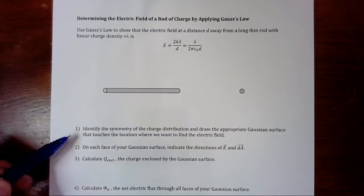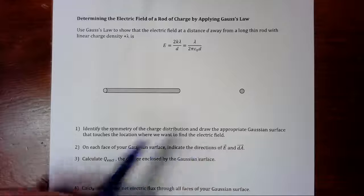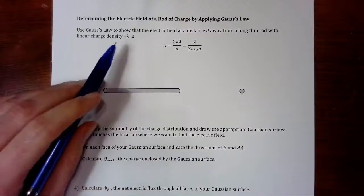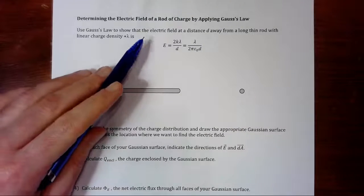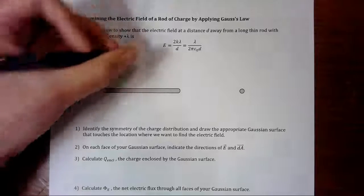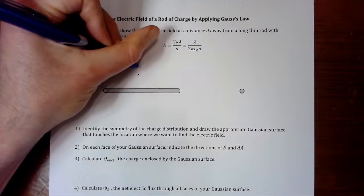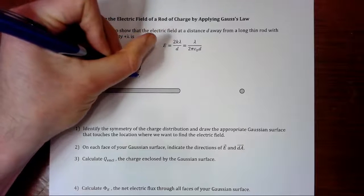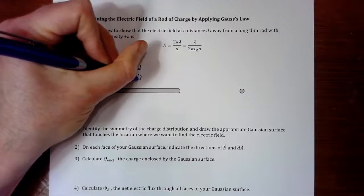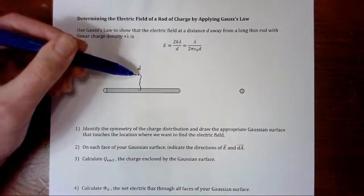First, we're going to identify the symmetry of the charge distribution and draw the appropriate Gaussian surface that touches the location where we want to find the electric field. Here it says that we want to find the electric field at a distance d away from the long thin rod. So I'll just say that my point is right there, that's our distance d away from the rod. And we want to know what the electric field is at that point.